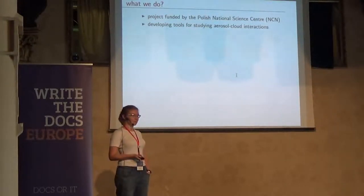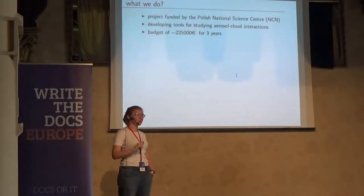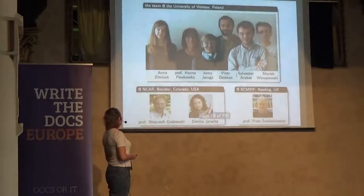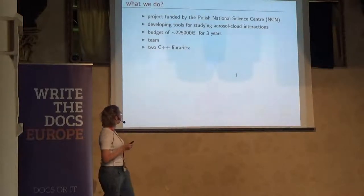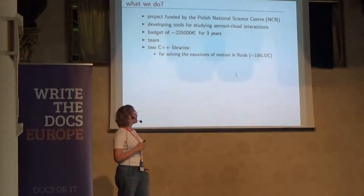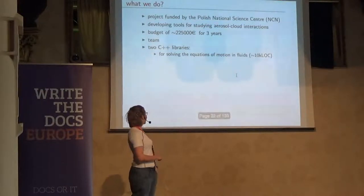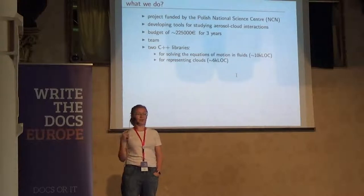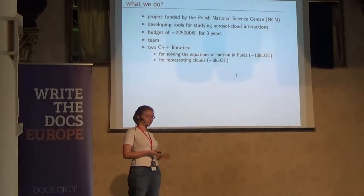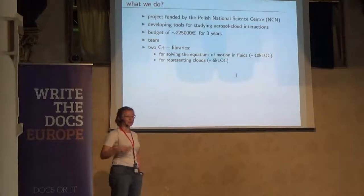What are those mysterious tools? That is the software that we promised to develop. We got funded — a bit less than a quarter million euros to spend over three years to develop this software. After some trial and error, we ended up having two libraries written in C++. The first library is for solving the equations of motion in fluids, so fluid mechanics, needed to solve the flow of air in the clouds. The second library is for representing the actual physical processes inside the clouds: phase changes between water vapor and liquid water, collisions between cloud droplets, chemical reactions within the cloud droplets, and so on. That's just to give you the flavor of the kind of software I'm going to try to document.